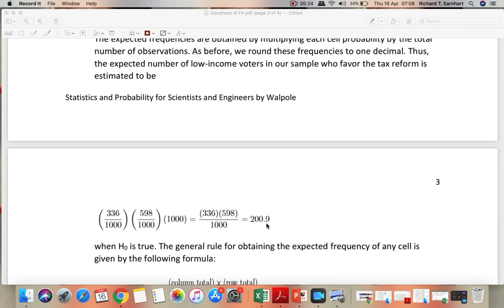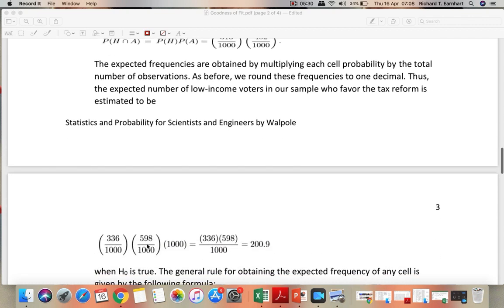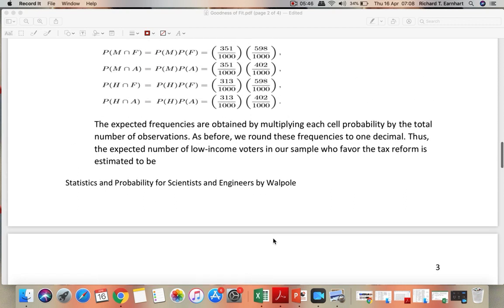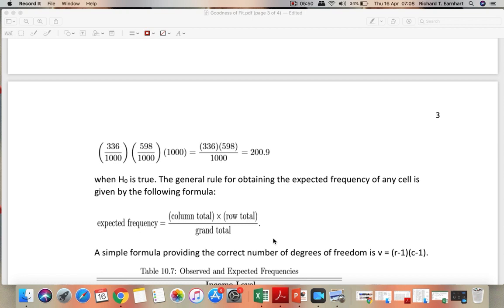To compute for the expected frequencies, we have the probability of the intersection multiplied by the grand total, the 1,000, the total frequency. You will get 200.9, the expected value, that is when the null hypothesis is true, or when the variables are independent.